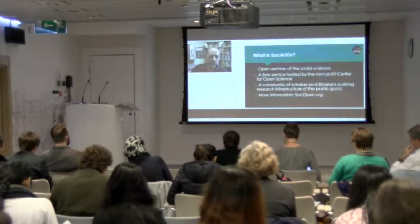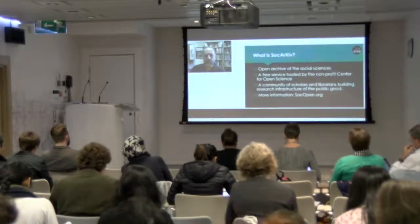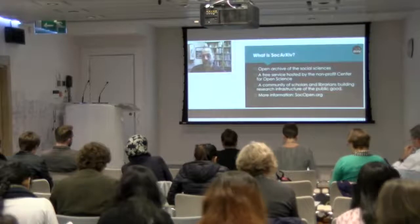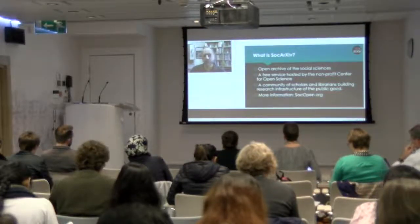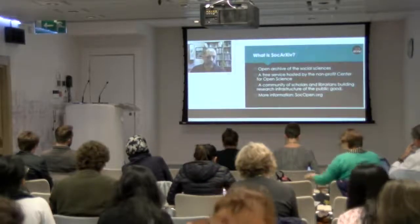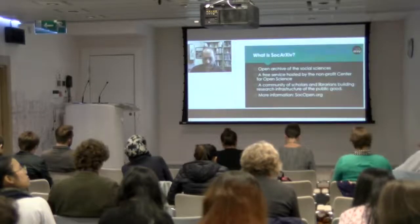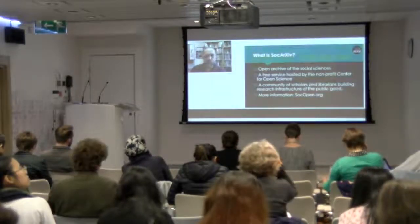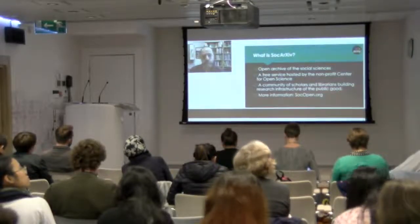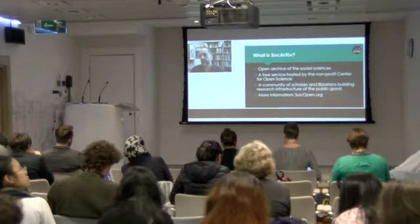Social Archive is an open archive of the social sciences. It's a free service that hosts research papers, hosted by the non-profit Center for Open Science on their preprint service. There are a number of other preprint communities on this system. We're a community of scholars and librarians trying to build research infrastructure for the public good, and we hope it will help all of us improve our research and its impact. For more information, visit our blog and website at socialopen.org. There's a frequently asked questions page, a tutorial, a tutorial video, and a bunch of other materials there.